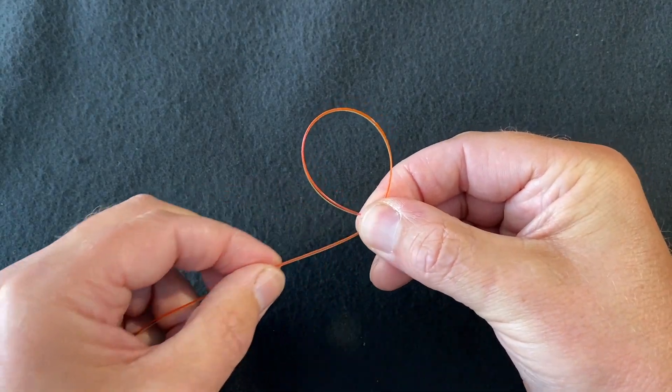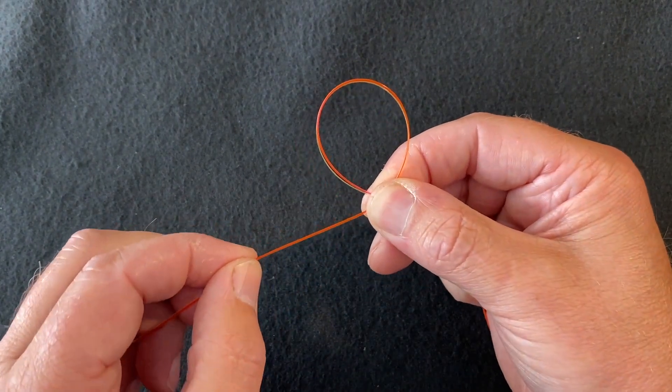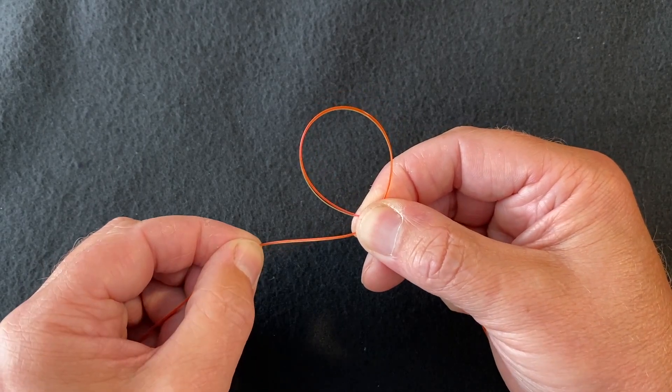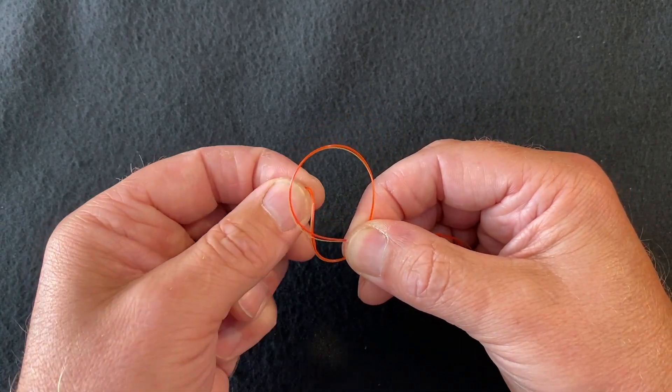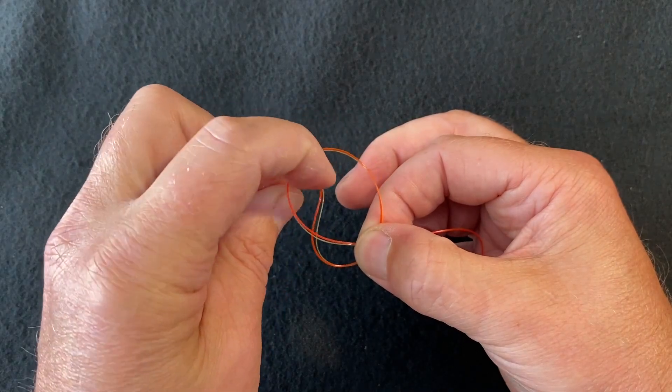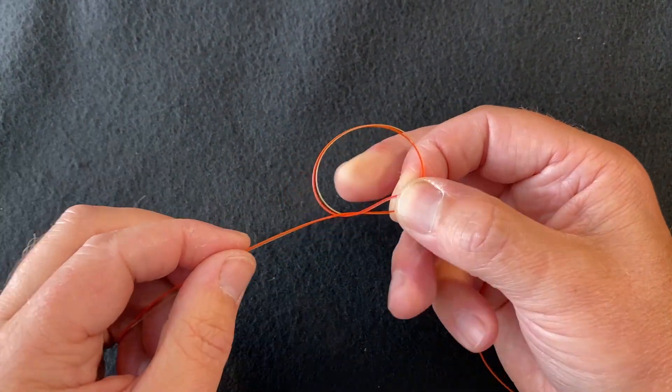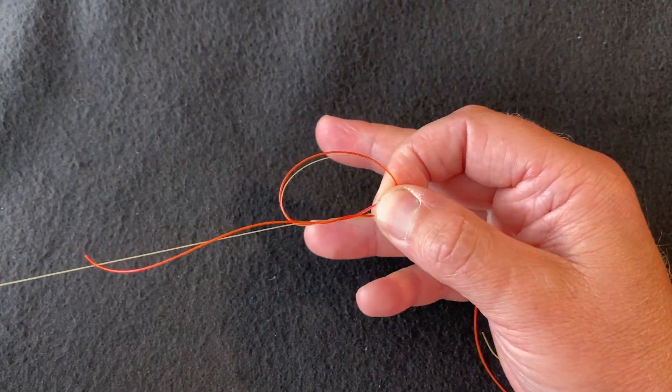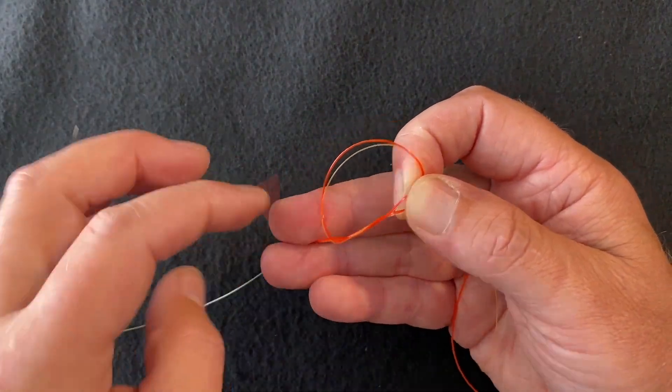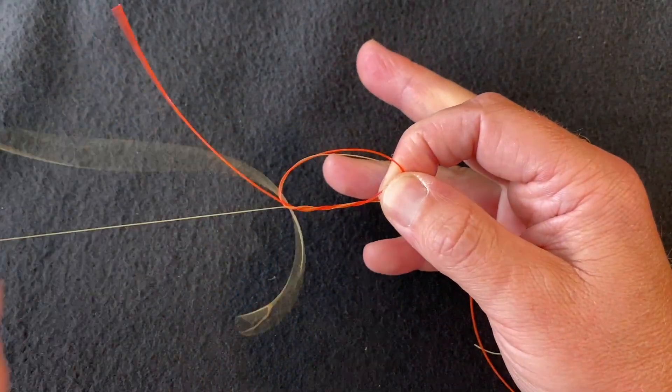Hold one end of the loop with your forefinger and thumb. Taking your leader end and the tag end of your main line, pass that through the loop once, twice, and three times.